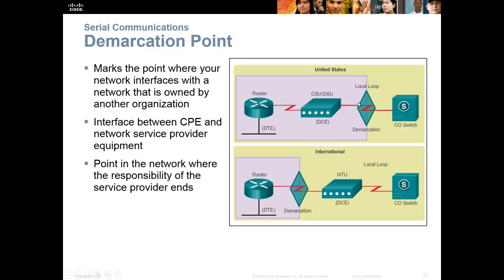Remember, the local loop is your connection from the closest central office into your building. It goes from the central office via underground fiber to a junction box, then wires to telephone poles, and into your building. They used to have a separate CSU/DSU — little white AdTran boxes. But nowadays we just go right from the router into the smart jack. Don't forget: the demarc is the last piece of provider-owned equipment. After the demarc, it's all your stuff.